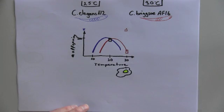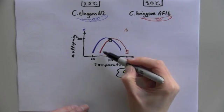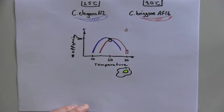So the gain in fitness of C. briggsae at high temperatures comes at a loss of fitness at low temperatures. This raised the question of what limits the temperature range of nematodes.